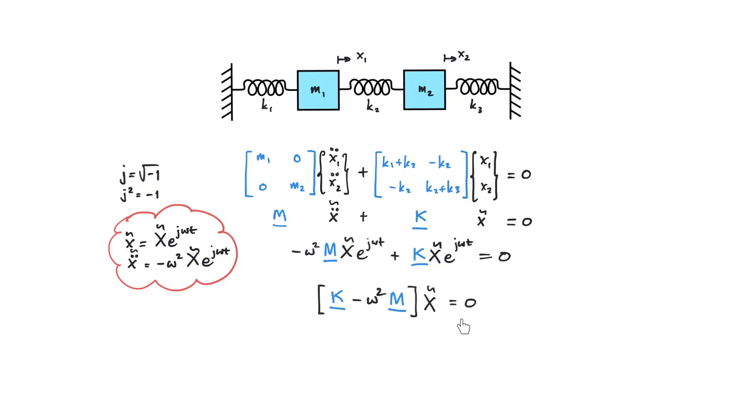Because the product of this term is zero, thus one of them must be zero, because any number multiplied by zero is zero. Now the question is which one from these two terms cannot be zero? Yes that's right. X cannot be zero because we have motions or displacement in the system. So if X cannot be zero then K minus omega square M must be equals to zero.